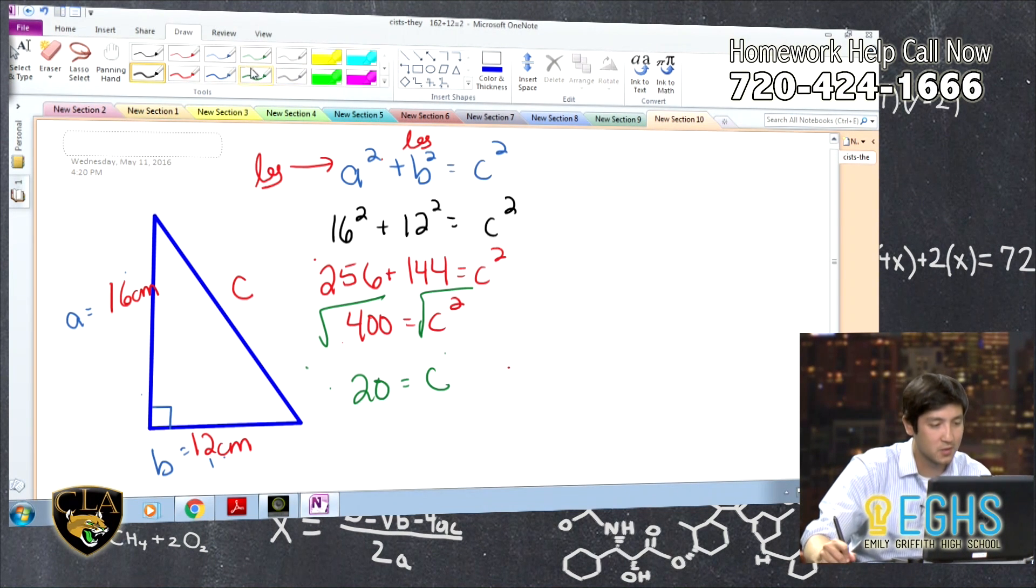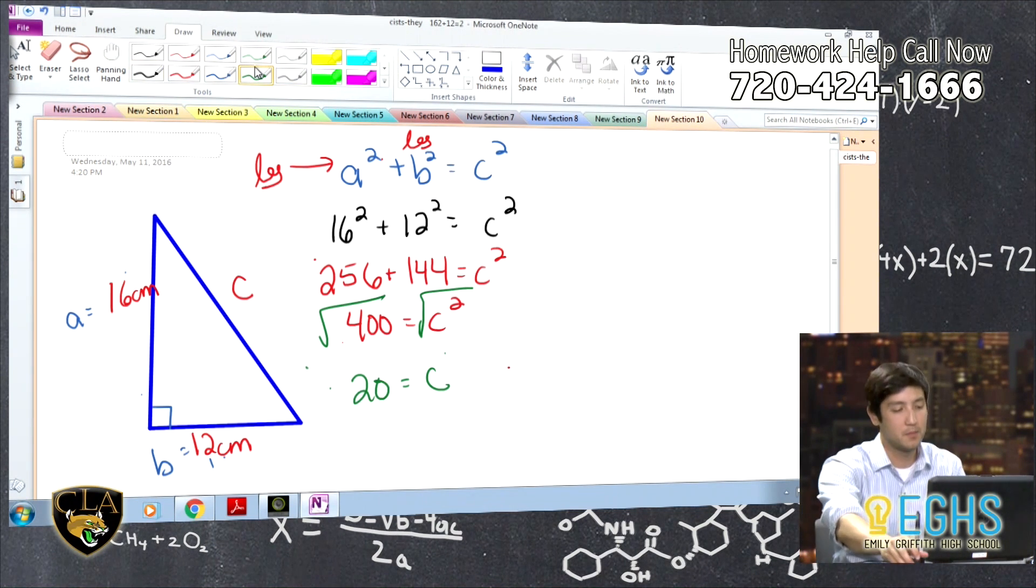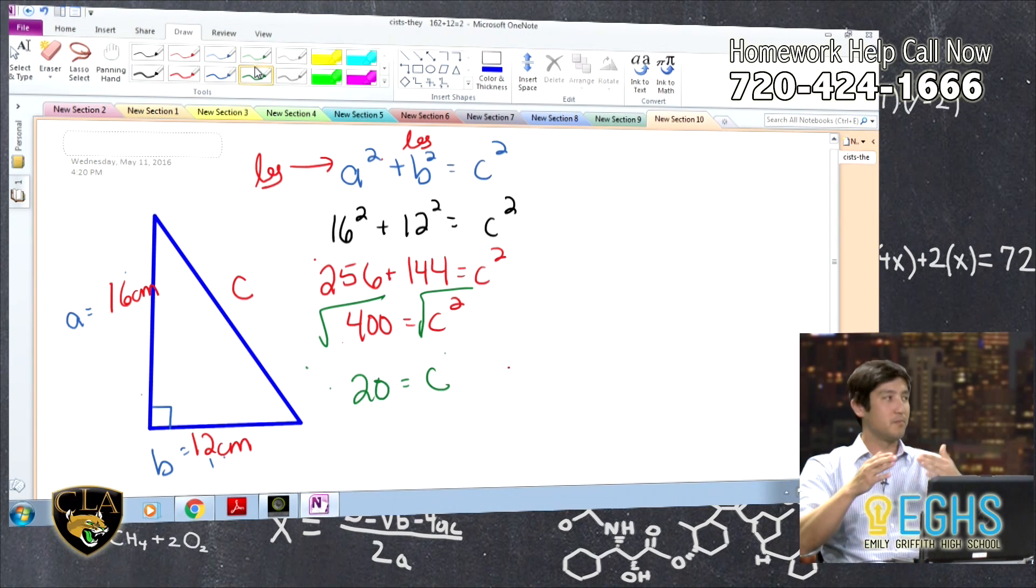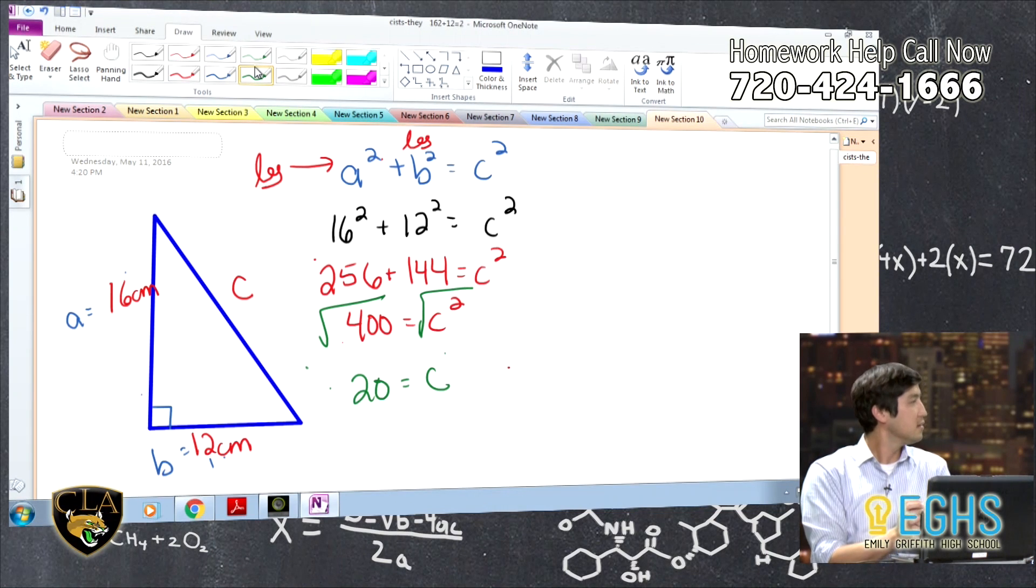And one way I like to also quickly check this, because I like to check my answers, is remember the hypotenuse should always be the longest side of a right triangle. So if you ever get a number and the hypotenuse is smaller than any of the other legs, you made a mistake. So it's just kind of a quick check.